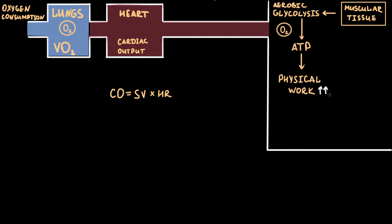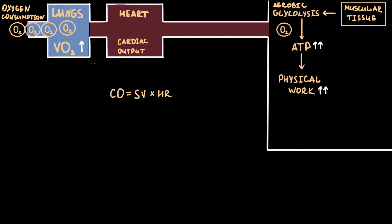For performing hard physical work, our body needs more energy from ATP splitting. Therefore, for efficient ATP production we need to increase oxygen uptake through the lungs, and as a result oxygen consumption increases. Also, to deliver a larger amount of oxygen to muscular tissue, the cardiovascular system must increase cardiac output, which can be achieved by either an increase in stroke volume or an increase in heart rate.